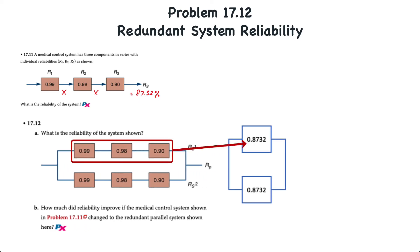The first is to take each of the systems in series and compress them or combine them, just like we did in problem 17.11. So, on the top part of the parallel redundant system, we'll take 0.99 times 0.98 times 0.9, and that gives reliability of 87.32%. And we'll do the same for the bottom part of the redundant system.